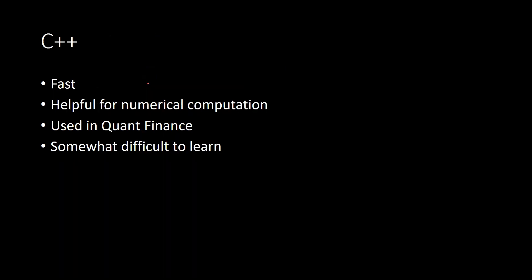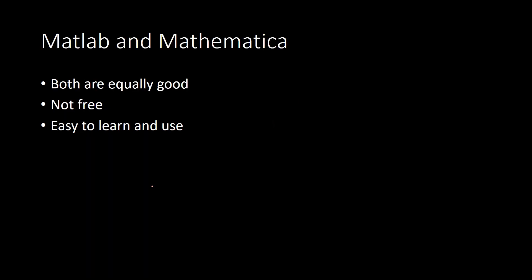C++ is a very hardcore programming language — someone has to be a serious programmer to use it. It is used in academia by scientists and also by many social scientists. You have to be programming-savvy to use C++, but it's quite fast for high numerical computation. There are lots of good mathematical and statistical packages in C++. It is used in quantitative finance, so people from financial economics use it a lot, though it is somewhat difficult to learn.